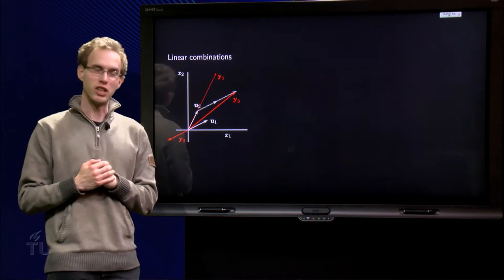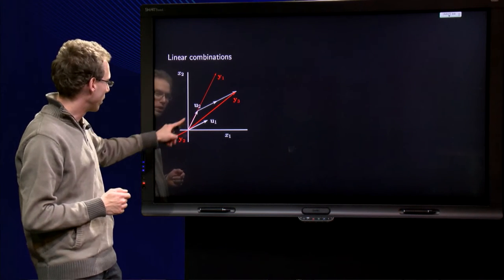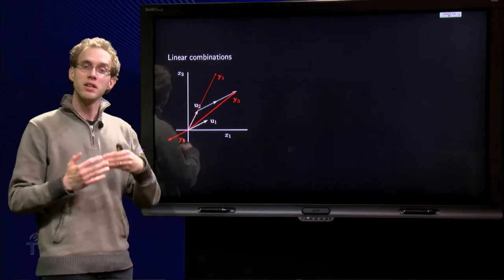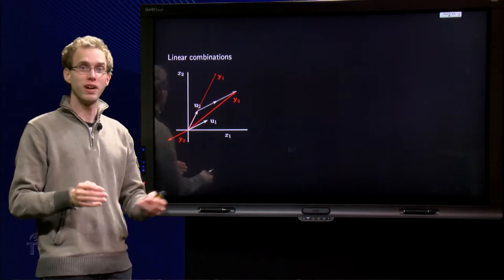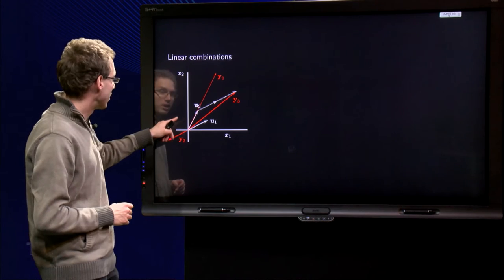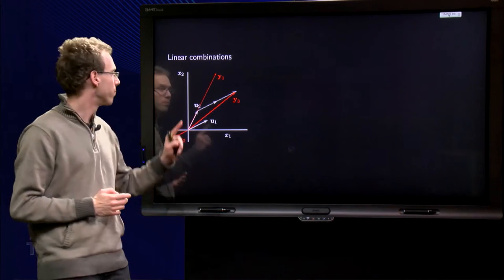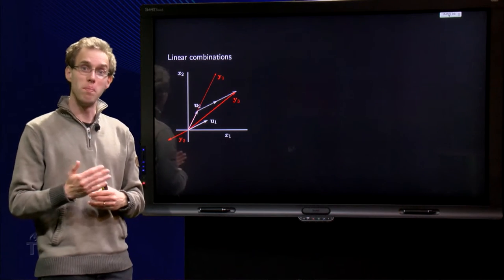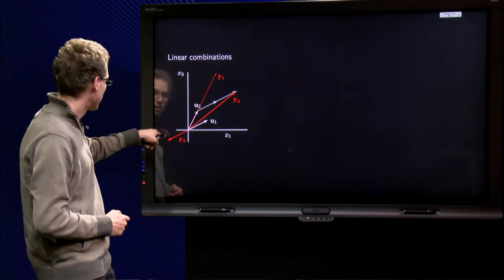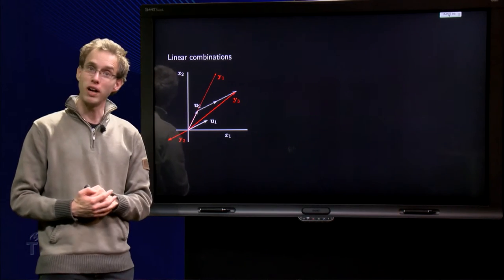Let us take a look at the picture, where we have two vectors u1 and u2. Using these two vectors u1 and u2, I can make other vectors. For example, I can take 3 times u2, and then I get the vector y1, or I can take the vector minus 1 times u1, then we get over here to y2.